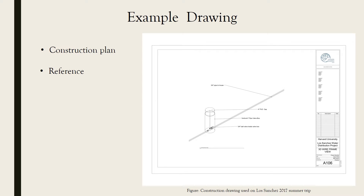This next drawing was also helpful to the Los Sanchez project in the Harvard chapter. It's a construction plan of personal connections to each house of a water distribution system. Because there were a lot of houses connected to the distribution system, this drawing was used as a reference every single time they put those connections into the houses.